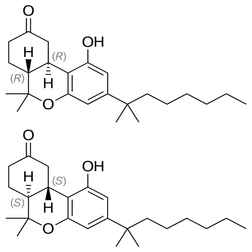Chemistry. Nabilone is a racemic mixture consisting of S,S plus and R,R minus isomers.